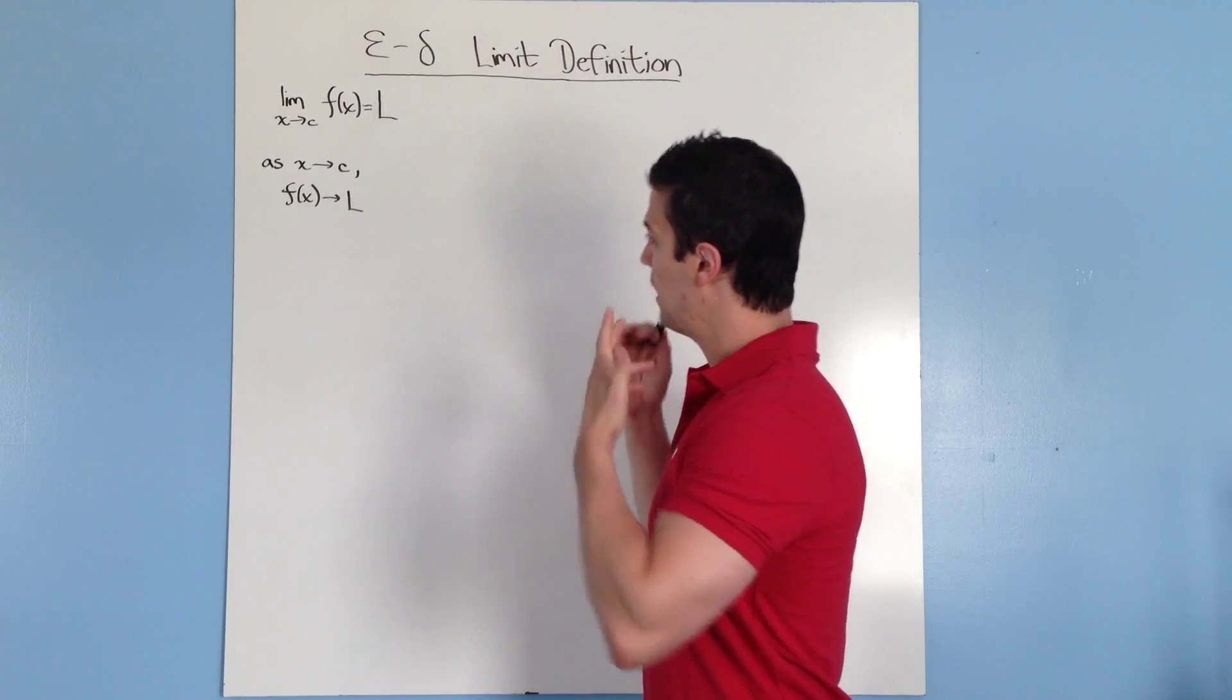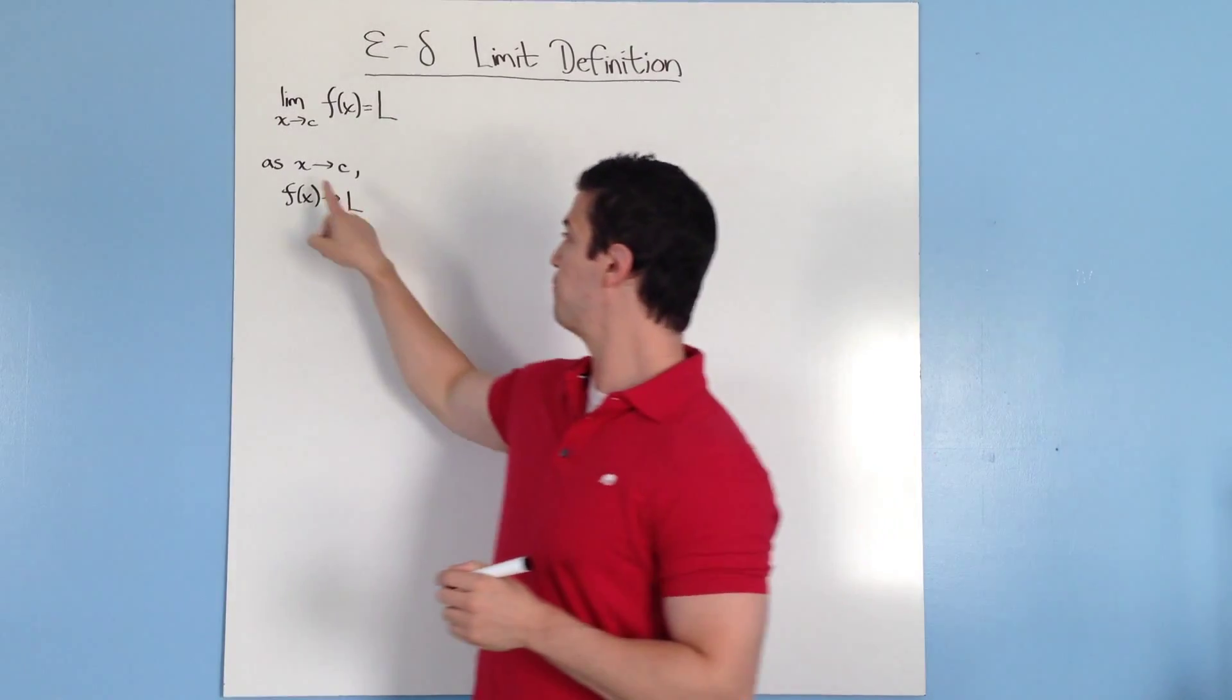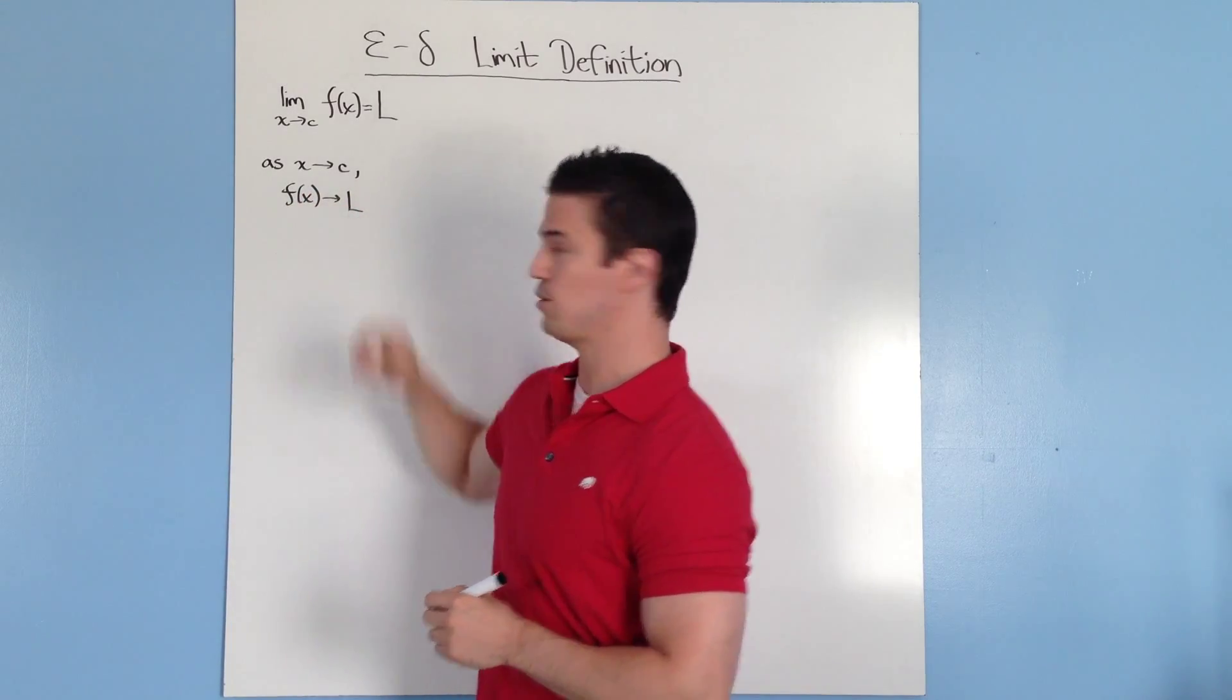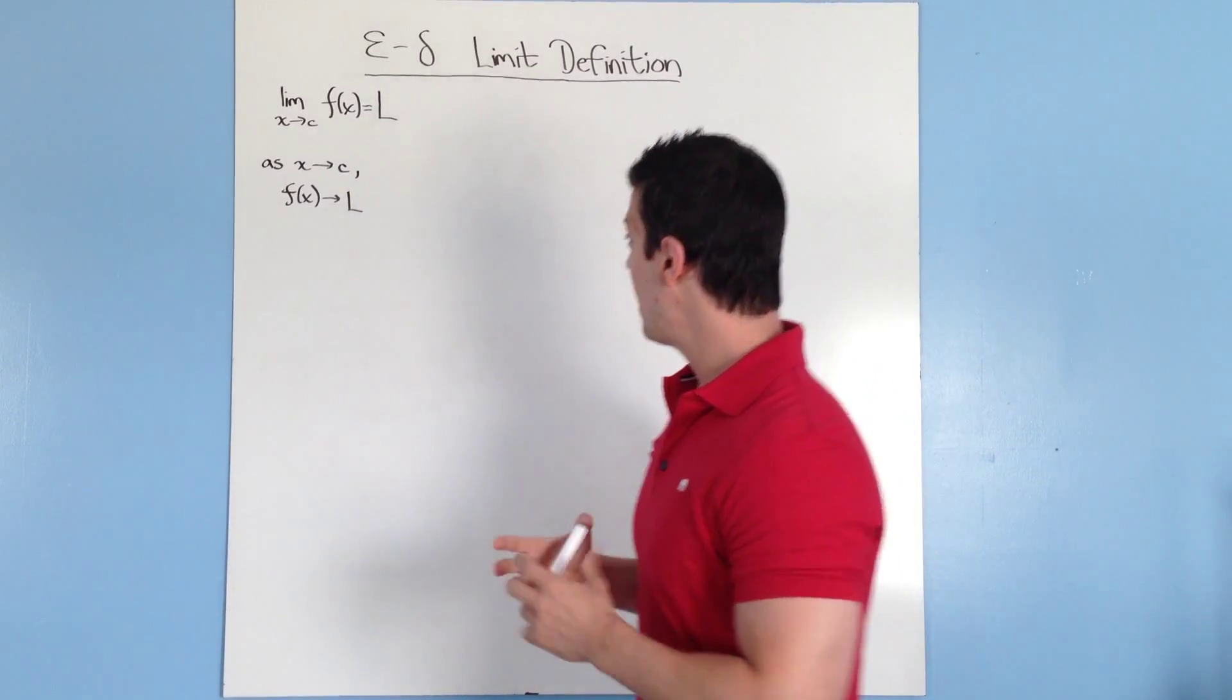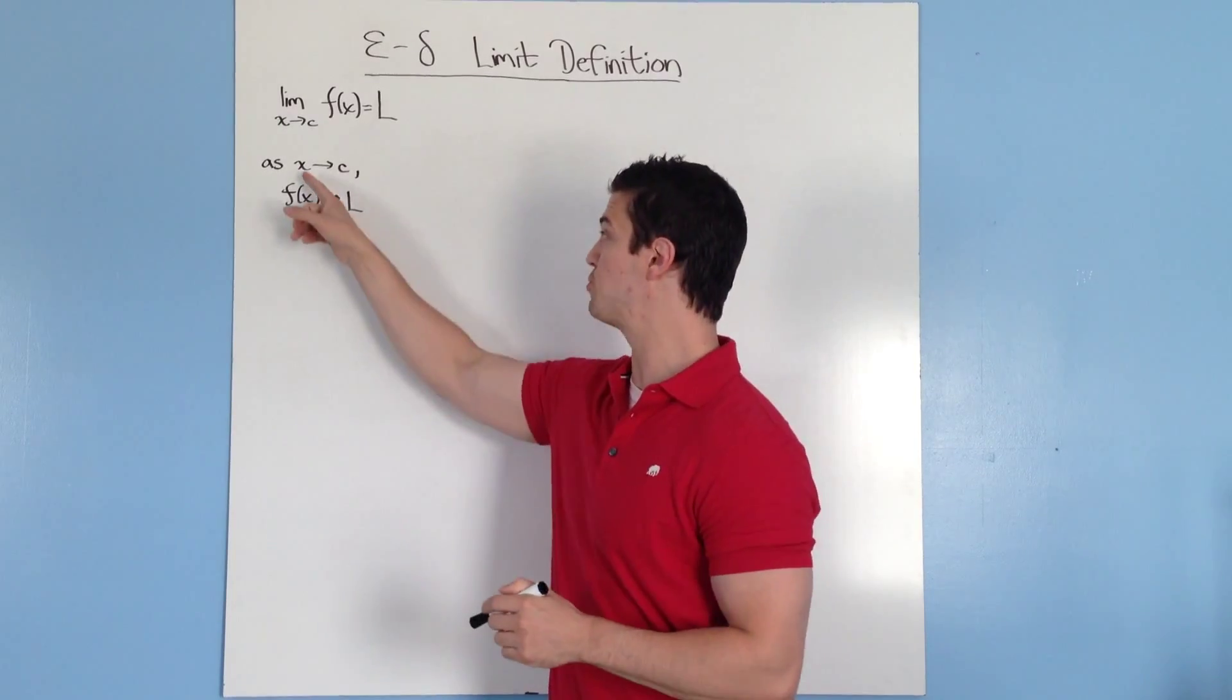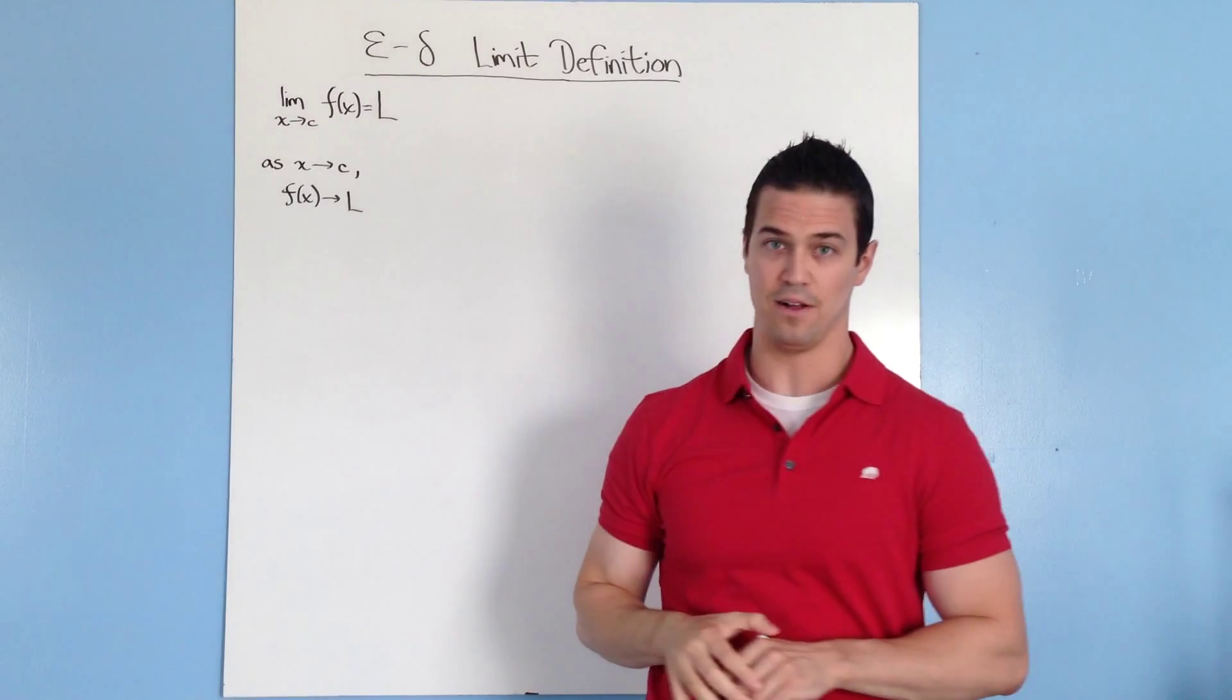To prove a limit exists, and that's basically what this is doing, you need to prove that as x gets closer to c, f of x is getting closer to l, just as it's written right here. So we need to figure out how to show the value of how close x is to c and the value of how close f of x is to l.